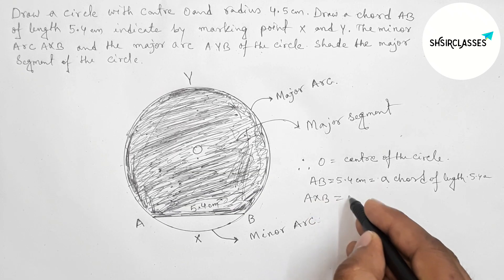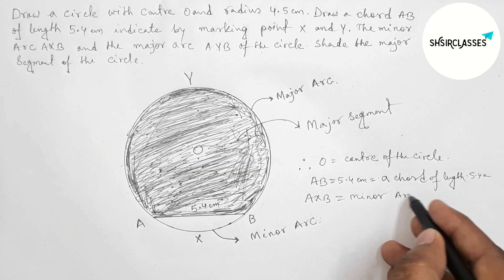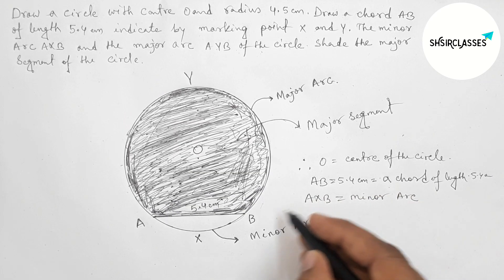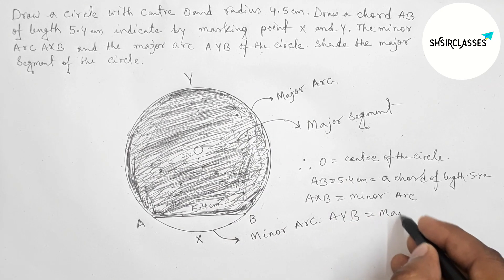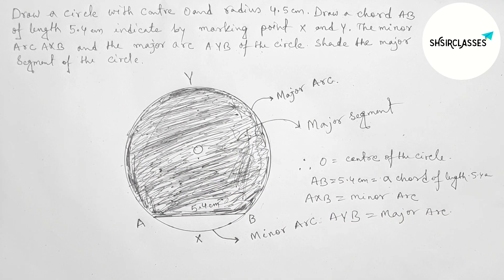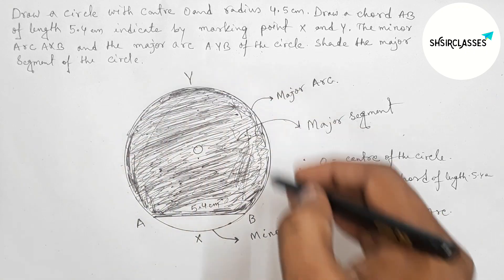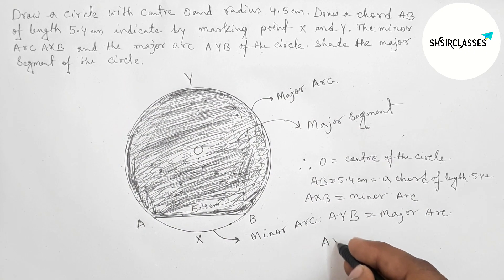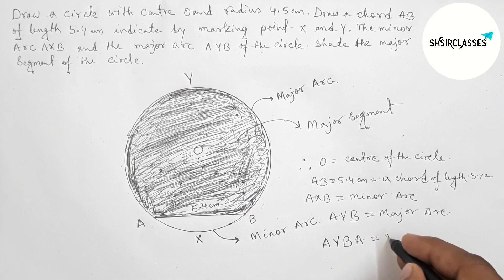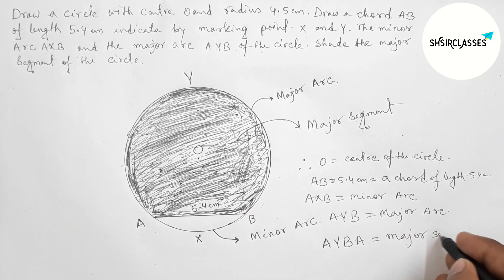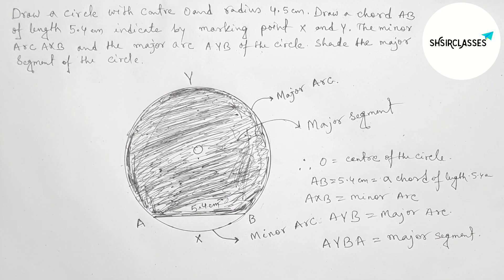So to summarize: AXB is the minor arc of the circle, AYB is the major arc of the circle, and AYBA is the major segment of the circle. That's all — thanks for watching, please share it with your friends.